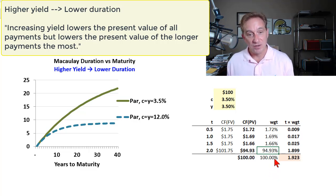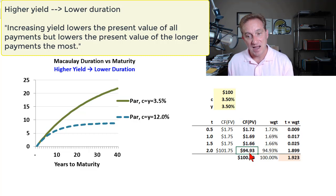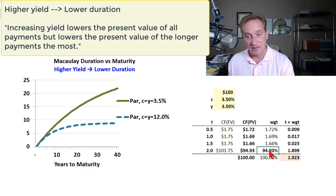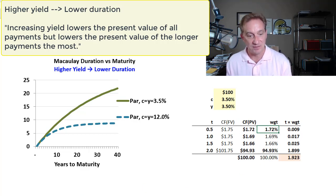The key intuition around what happens to duration when we raise the yield is what happens to these weights. Raising the yield — the discount rate — affects the present value of all cash flows. Increasing the discount rate brings all present values down, but it has the most dramatic effect on the final cash flow. So the weight of the final cash flow comes down while the weight of the nearest cash flow goes up.